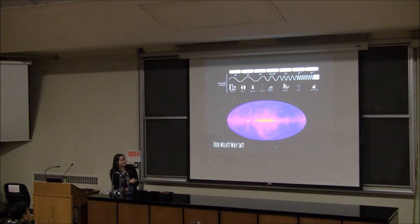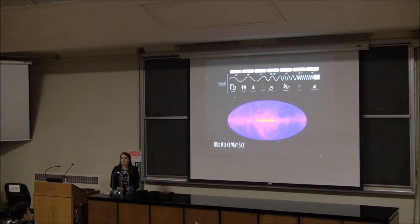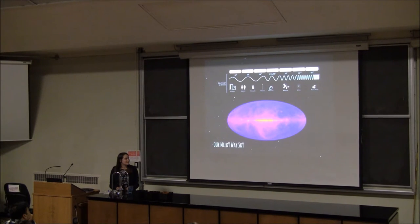This feature right in the center here is an object called Sagittarius A star. It's a supermassive black hole. It's emitting radio radiation not by itself, because we know no light escapes any black hole, but the material around it is emitting in those radio waves. It's a very bright source.